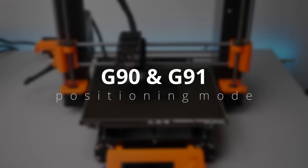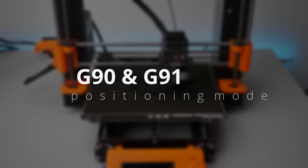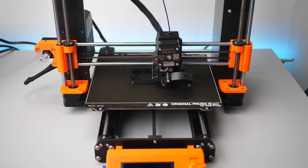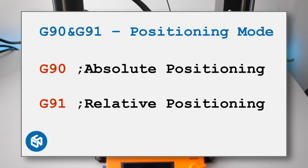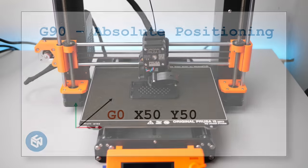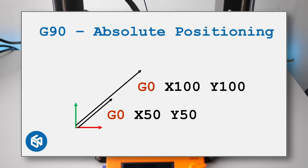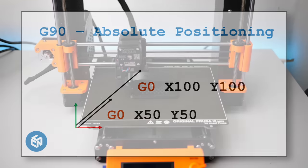A very important command pair in context to G0 and G1 is G90 and G91. These set the positioning mode to absolute or relative. If G90 is set, all movements are to absolute positions in the printer's coordinate system. So G0 X50 Y50 will move the tool head to X50 Y50, and a following G0 X100 Y100 will move the tool head to X100 Y100.